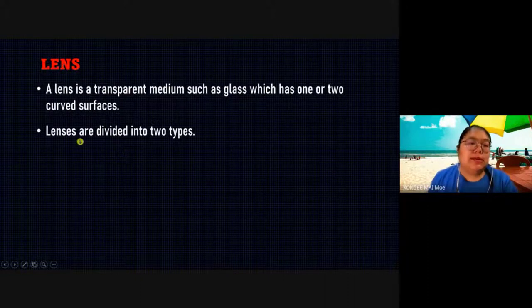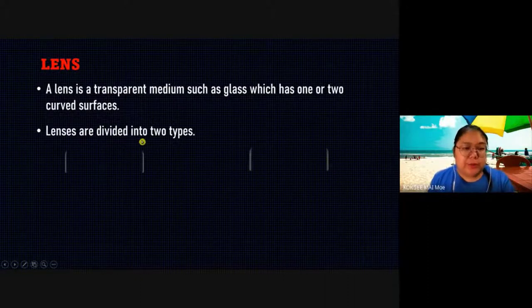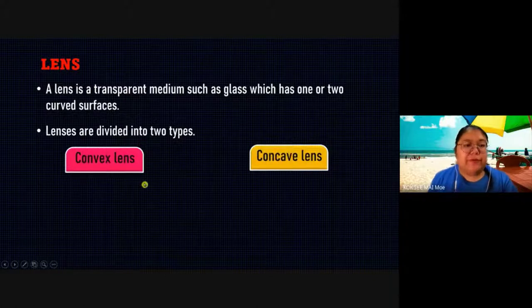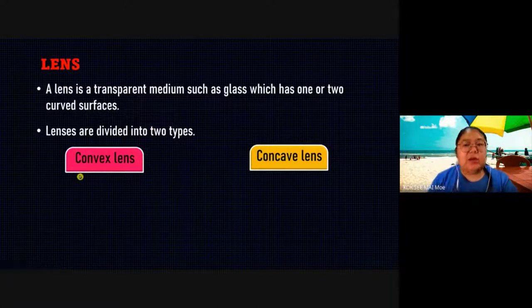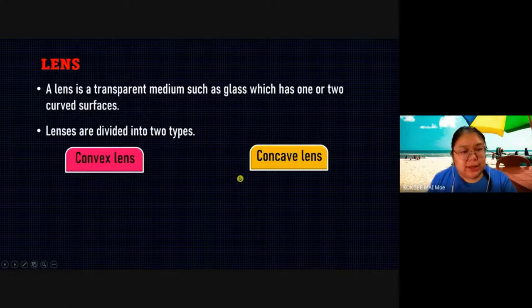So the lenses are divided into two types. The first type we call a convex lens, and the other one is a concave lens.